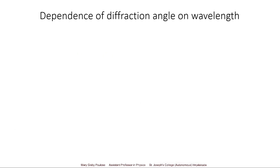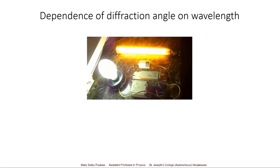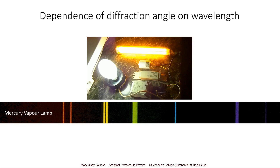Let us see the dependence of the diffraction angle on wavelength. We have seen two light sources in our laboratory: the white mercury vapour lamp and the yellow sodium lamp. The mercury lamp gives composite light that can be diffracted into its different component wavelengths. The spectrum from the mercury vapour lamp shows the violet one and violet two spectral lines, the blue line, the green line, yellow one line, yellow two line, the orange line, and the red line. Each has a characteristic wavelength for mercury gas.